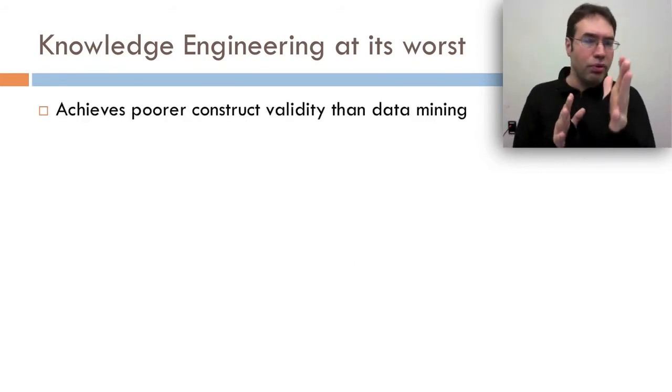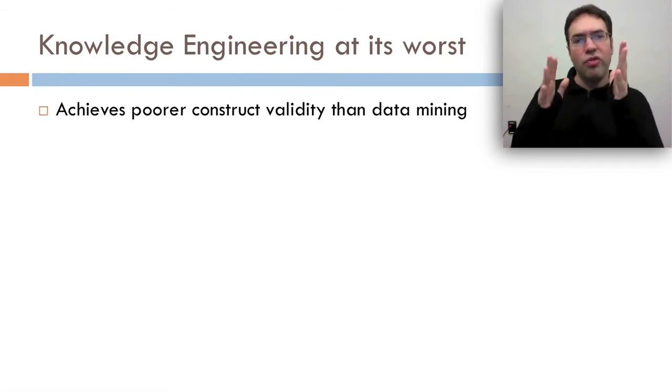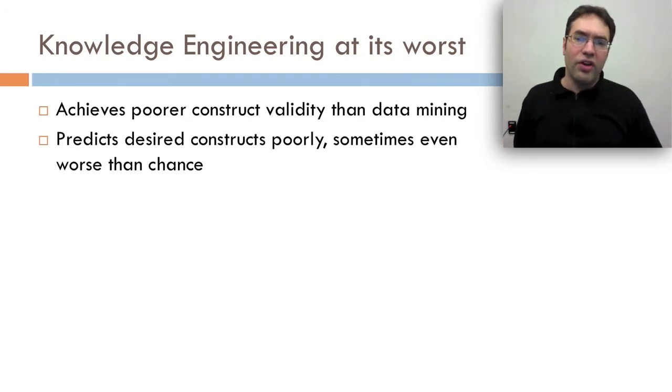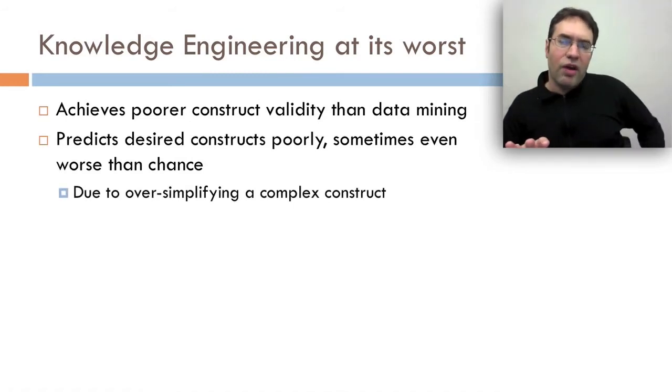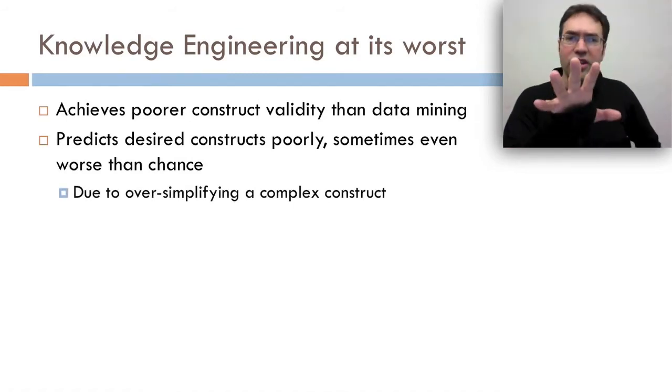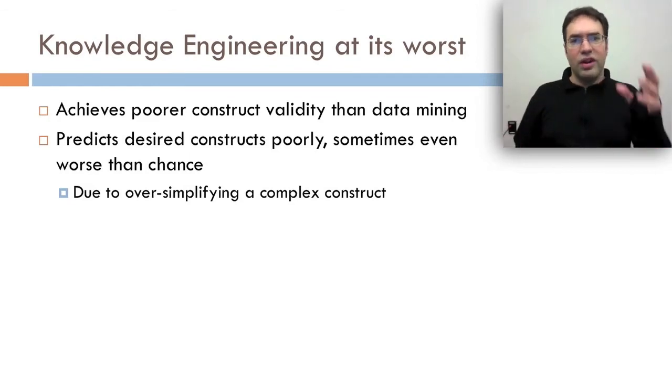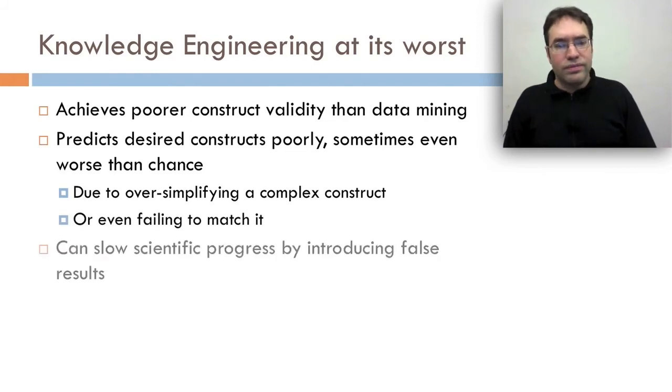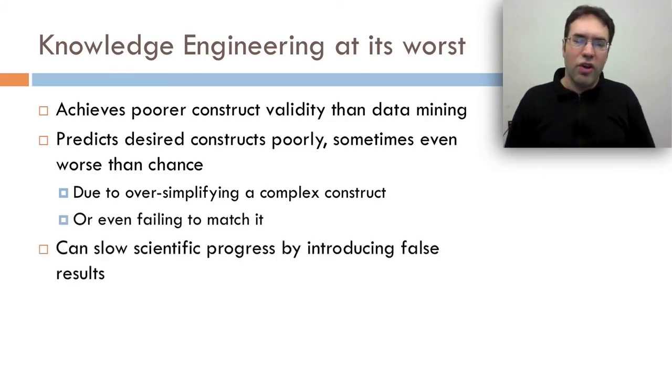This kind of knowledge engineering achieves poorer construct validity than data mining because there's no real evidence and no real attempt to really get great construct validity. And it predicts desired constructs poorly, sometimes even worse than chance. And that's because they oversimplify often a complex construct. If you looked at Aleven's model of help-seeking, it was quite complex. You have to have a complex model to really understand real phenomena that you see. And if you come up with something incredibly crude, it's not going to capture that. It may even fail to match it at all.